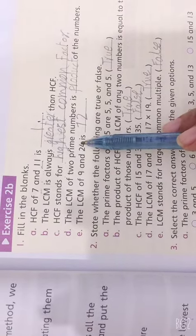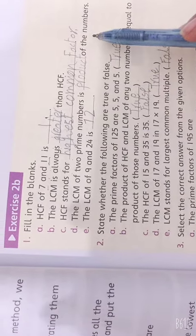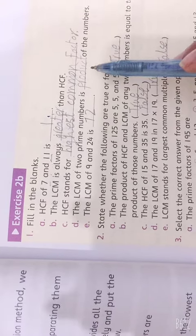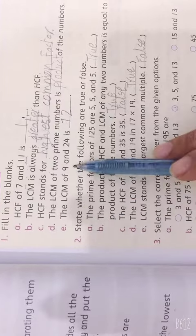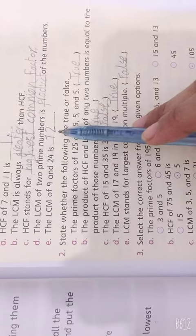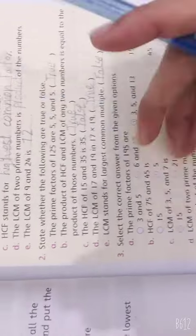The LCM of two prime numbers is the product of the numbers. When we take LCM, it is a product. We multiply it. The LCM of 9 and 24 is 72. Let's see this in your notebook.